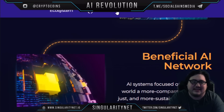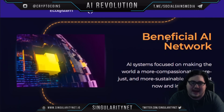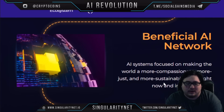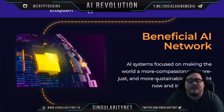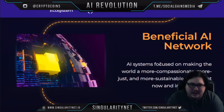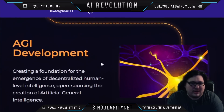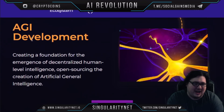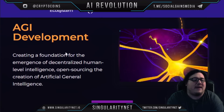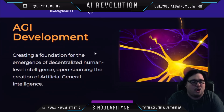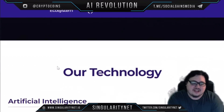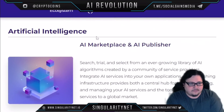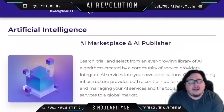SingularityNET offers AI systems focused on making the world a more compassionate, more just, and more sustainable place — right now and into the future. They do this through AGI development, creating a foundation for the emergence of decentralized human-level intelligence and open-sourcing the creation of AGI.